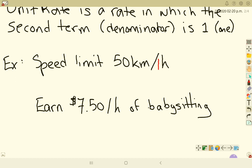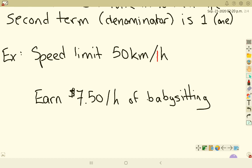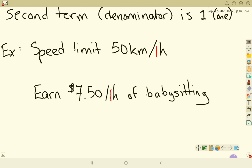We say something like you might earn $7.50 per 1 hour of babysitting. So if you babysit for 1 hour, you get $7.50. If you did 2 hours, then you would get another $7.50, and your total would be $15.